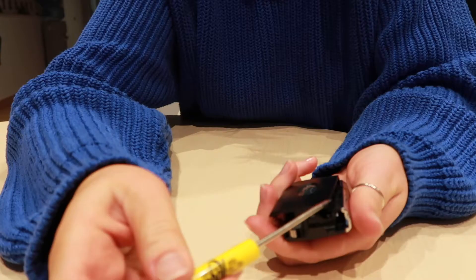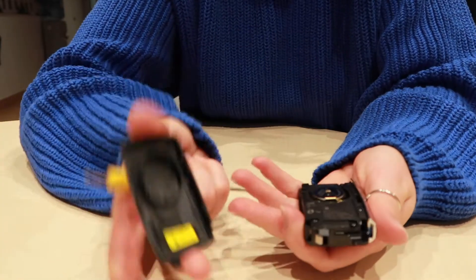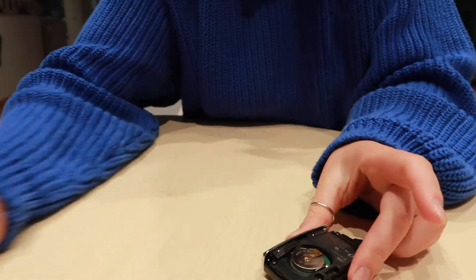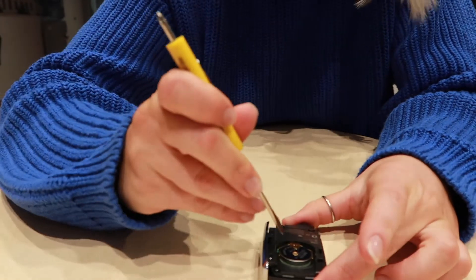Slide your flathead screwdriver in again. Once you slide it down on the left side the top should just pop right out and now we're just looking at the battery to slide that out.